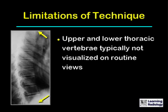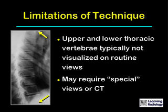There are limitations to conventional radiography of the thoracic spine. Both the upper and lower thoracic vertebrae are typically not visualized on routine views — the upper because of the shoulder girdle and the lower because of the soft tissue of the abdomen. That may require special views such as a swimmer's view, a cone-down lateral of the thoracolumbar region, or CT.